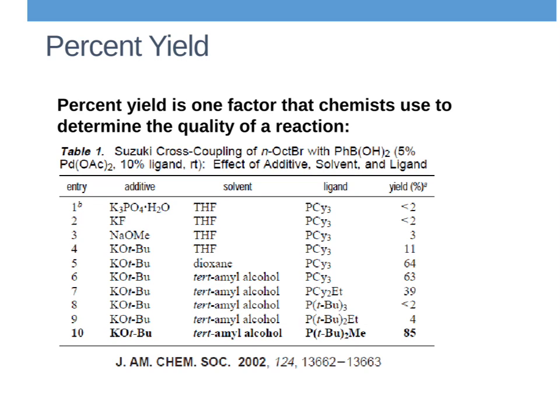One of them is percent yield, or how much yield did you get from your reaction. Other things are how safe is it, how environmentally friendly are the starting materials or products, is it going to explode, how expensive are the materials, how expensive is the waste. There's all kinds of metrics to decide if a reaction is good or bad. But percent yield is the one that is used most universally in science.